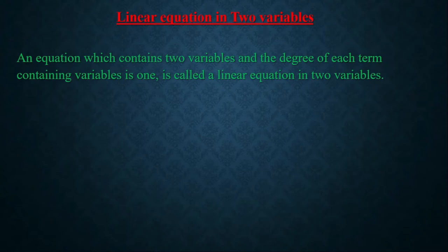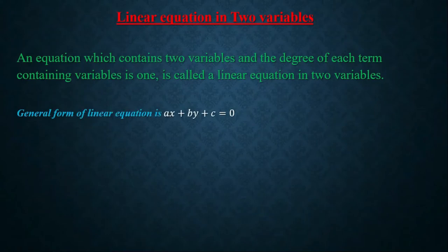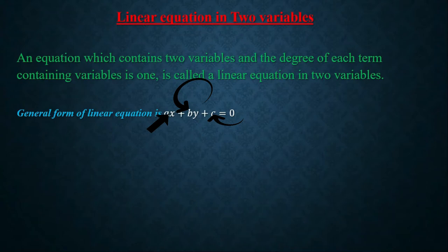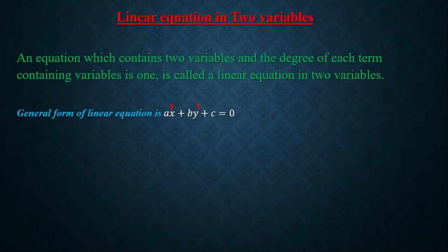An equation which has degree — which has power 1 — is called a linear equation. The general formula for this equation is ax + by + c = 0. Here x and y are two variables, and a, b, c are real numbers, meaning they are constants. In variable x and y, the power of x is 1 and the power of y is also 1, so they form a linear equation.